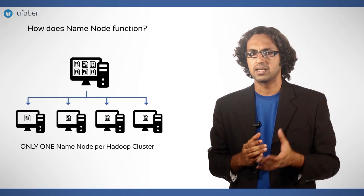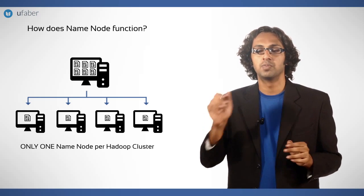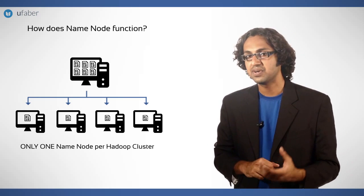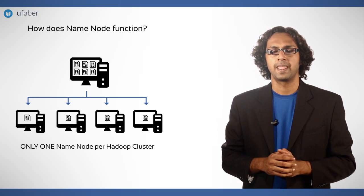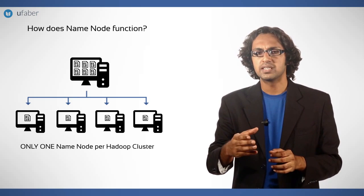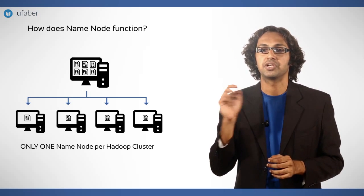When new data is submitted in a Hadoop cluster, the name node divides it into smaller parts. Then it identifies the data nodes which can actually store this partition data. The name node then transfers the data to each data node and maintains a table of data allocation.